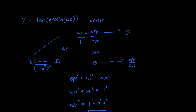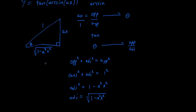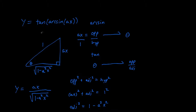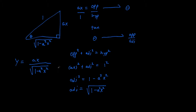We are solving for tangent of theta, which we produced using arcsine of AX. Tangent of theta is opposite over adjacent. So when we take the tangent, Y is going to equal AX over the square root of 1 minus A squared X squared. That is a much more convenient derivative to take, so let's use this.